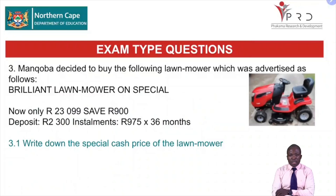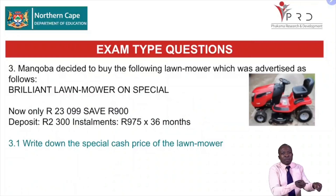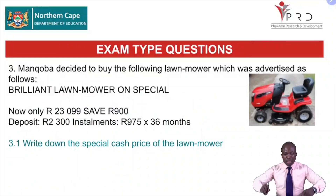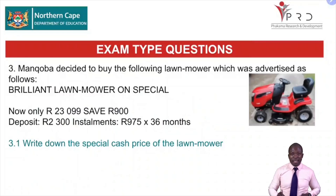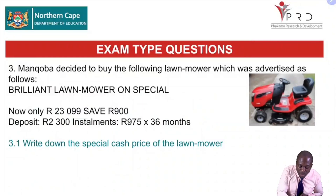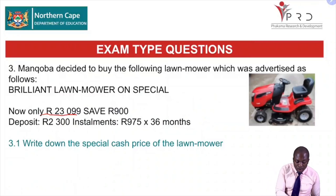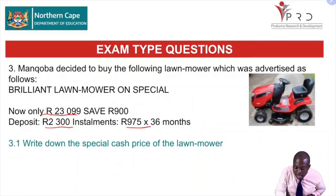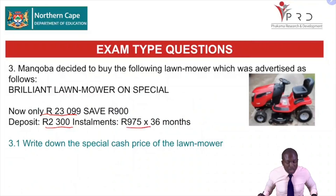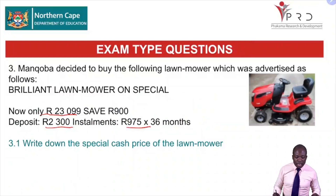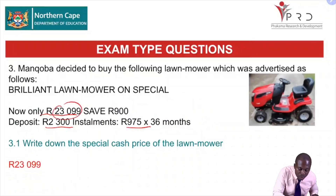Here is question three. We have Mangoba who decides to buy a lawnmower on special for 23,099 rand — you will save 900 rand. The deal requires a deposit of 2,300 rand, and installments of 975 rand for a period of 36 months. Question 3.1 — write down the special cash price for the lawnmower. The answer is 23,099 rand. Question 3.2 — determine the price before the special: 23,099 plus 900 savings gives 23,999 rand.